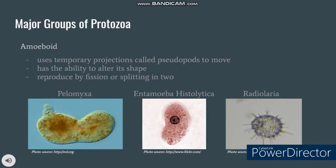Protozoa has four major groups and the first is amoeboid. Amoeboid uses temporary projections called pseudopods to be able to move. These pseudopods also give them the ability to change shape because they can move in any direction and engulf food. Amoeboids reproduce by fission or splitting in two. Some examples are Pelomyxa, found in stagnant freshwater ponds or slow-moving streams; Entamoeba histolytica, a parasitic amoeboid responsible for amoebiasis; and Radiolaria, which are non-motile, using needle-like pseudopods to help them float as they drift along water currents.